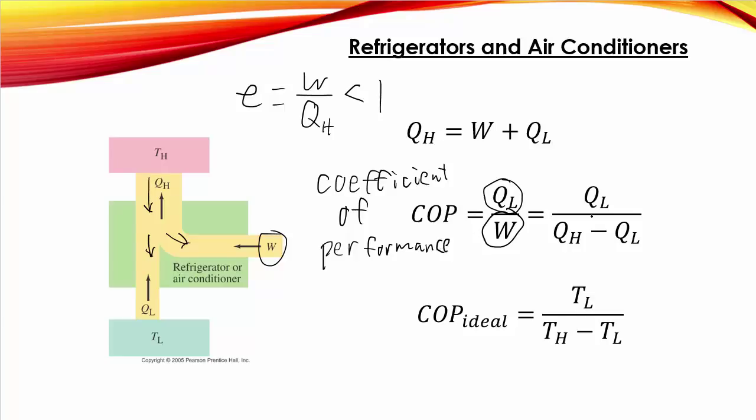It is still a way to kind of gauge cost-benefit analysis, but it's not a percentage, so we give it a different name. And, like we did before, we can substitute in for W, we can have QH minus QL.